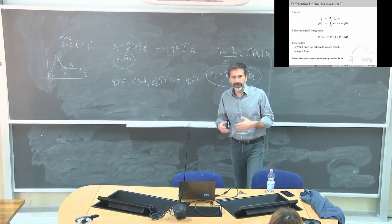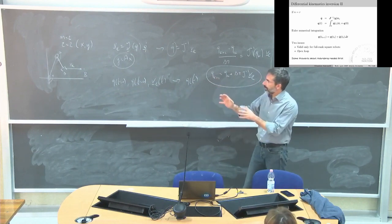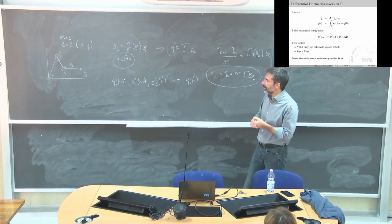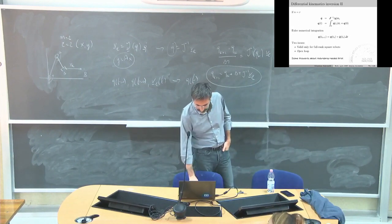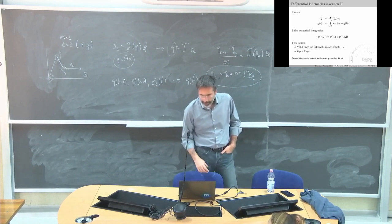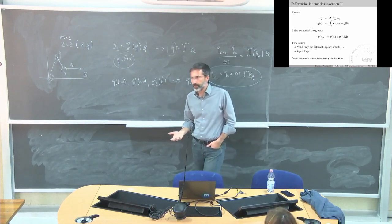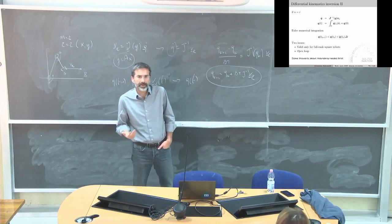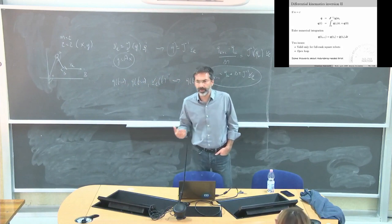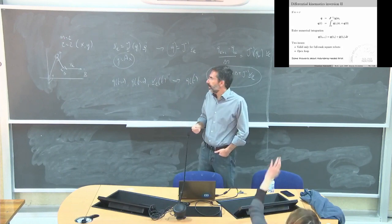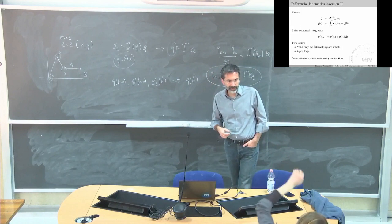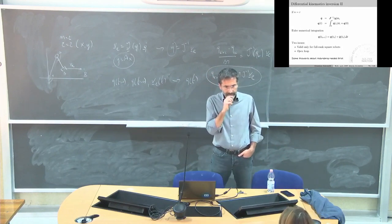This is too simple — we have a lot of problems. This is simplified to the maximum. We will make it more complex today and in the next lessons. First, this solution is valid only for square robots. My robots are generally not square because the square case is a specific situation. Can you give me an example of the physical meaning of when the Jacobian is not square — when we have a non-square Jacobian?